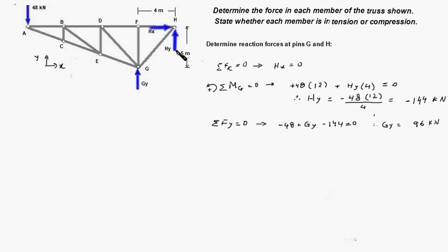That is HY is in downward direction and summing the forces in Y direction gives GY equal to 192 kN.